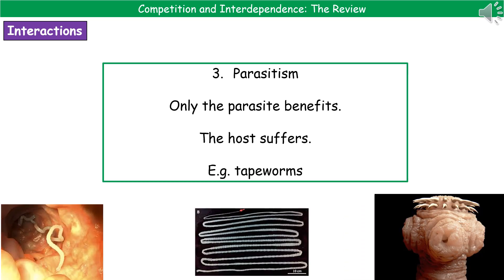The third and final ecological relationship is parasitism. This is one where the parasite is going to benefit, but the host is going to suffer — so it's a very one-sided relationship. A good example is the tapeworm. I've given you a zoomed-in picture of the tapeworm's head on the bottom right, you can see all the different segments of its body in the middle, and a tapeworm actually embedded in the gut on the left. If you've got a tapeworm, it's going to steal all of those nutrients from your digestive system — so it benefits, but you're suffering because you're not getting any of those nutrients needed to keep you alive.